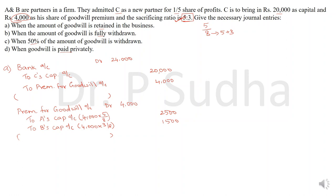Under Situation A, the goodwill amount is retained in the business, meaning A and B are not taking the goodwill with them. If the goodwill is retained in the business, no further journal entry is needed. That is the complete answer for Situation A.